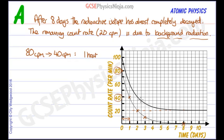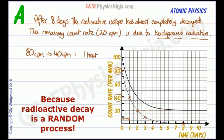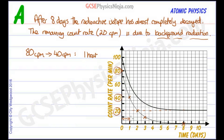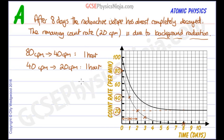It's best to do this a couple of times and take an average. Going from 40 to 20 counts per minute, the time taken is another 1 day. So it's looking pretty certain that our half-life is very close to 1 day. Taking the average of both measurements gives us a half-life of 1 day.